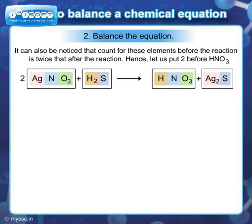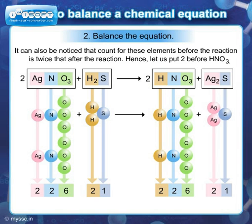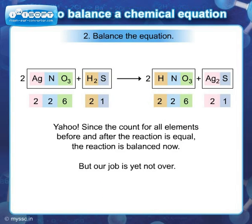It can also be noticed that the count for these elements before the reaction is twice that after the reaction. Hence, let us put two before HNO3. Let us again make an element inventory — note the number of atoms both before and after the reaction. It is seen that all the elements have equal number of atoms in reactants and products. Since the count of atoms for all elements before and after the reaction is equal, the reaction is balanced now.